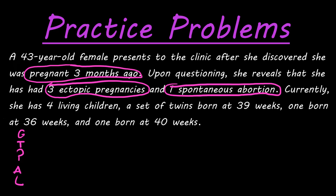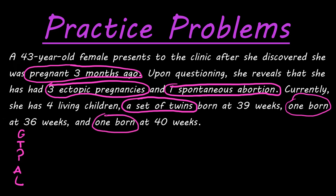She has four living children: a set of twins, one born at 36 weeks, and one born at 40 weeks. This example makes us think a little more because we have a set of twins. Even though they're two people, it counts as one pregnancy and one birth, because both are coming out at the same time — it's a multi-birth gestation. So: one current pregnancy, plus three ectopic, plus one spontaneous abortion equals five, plus the twins is six, plus two more individual births gives us a total Gravida of eight.